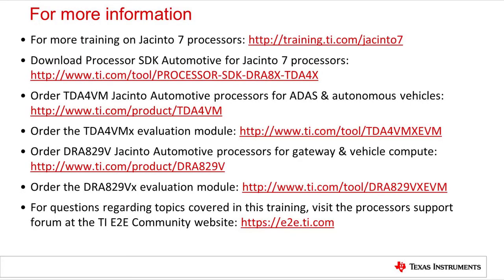Thanks for listening to this training session on how to build gateway applications using the Processor SDK on the Jacinto 7 platform. As part of this session, we reviewed a typical hardware block diagram for a gateway system and learned how to leverage the Jacinto 7 platform capabilities for building gateway applications. We also looked at reference software architecture for a gateway system and how it can be realized using the various SDK components running on the multiple heterogeneous cores. We then looked at the system design for two gateway-centric applications: the CAN-Ethernet bridging application and the Ethernet traffic filtering and routing application. We also looked at where to find these in the Processor SDK and detailed steps for building and running these demos. For any further information, refer to the Processor SDK documentation included in the SDK package or accessible from ti.com. For further clarifications and assistance, you can use the E2E forum for posting your queries.